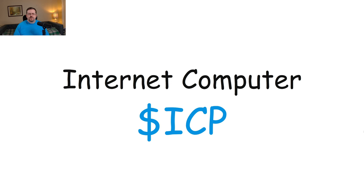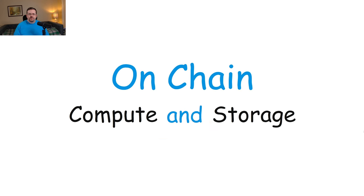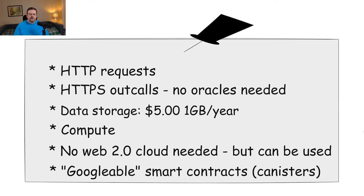Internet Computer is one of the best, if not the best, blockchains available today. The reason for that is because you can actually build everything on-chain with Internet Computer, including compute and storage. This means that Internet Computer can service HTTP requests and HTTPS outcalls, which means that you would no longer need an oracle like Chainlink.